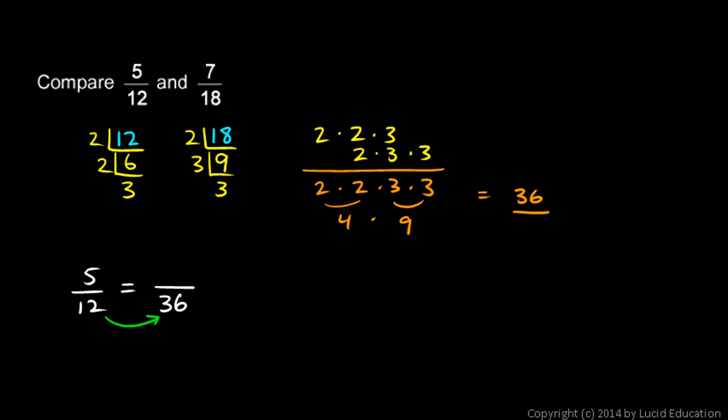12 times what is 36? 12 times 3. So that means we multiply the numerator times 3 as well. And 5 times 3 is 15. So 5-twelfths is equal to 15-thirty-sixths.